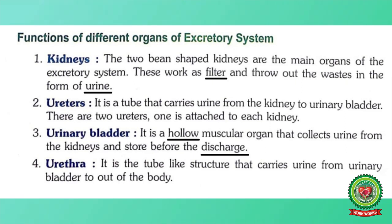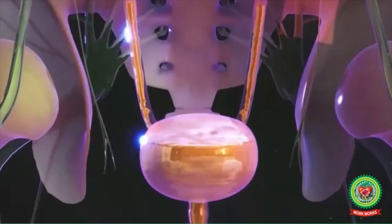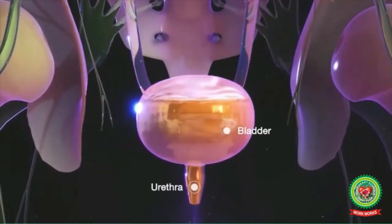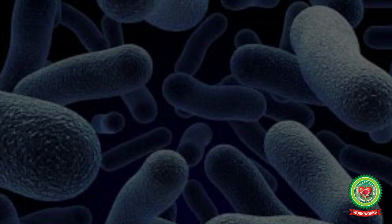The next excretory organ is the urethra. It is a tube-like structure that carries urine from the urinary bladder out of the body. The urethra is the opening present at the base of the urinary bladder and helps in the removal of urine from the body.